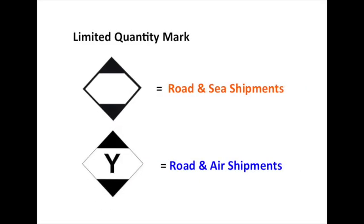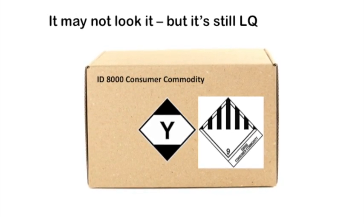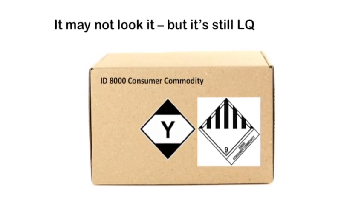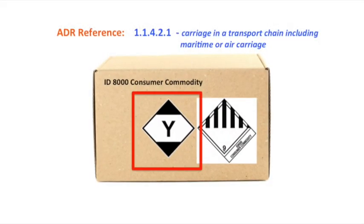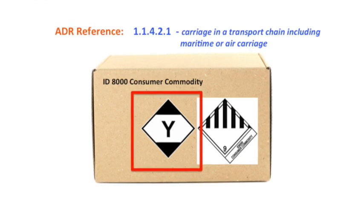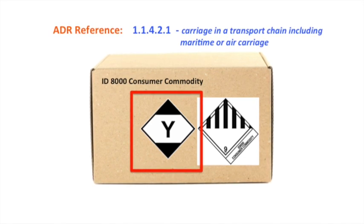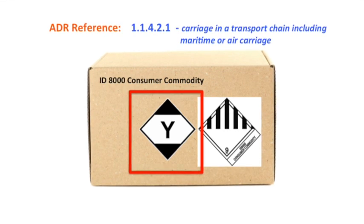Air transport segments of the journey also require a different mark to be applied to the package. This includes a Y in the mark centre. This is a perfectly valid mark provided that the shipment has an air segment of its journey. Whilst we are on it, this air journey limited quantity label is also shown on packages that are declared as ID 8000 consumer products for air transport. You may encounter this if you pick up freight from an airline or airport based freight forwarder. ID 8000 is not a valid classification for road shipments and the Air IATA code requires the product to also display a class 9 dangerous goods label too.